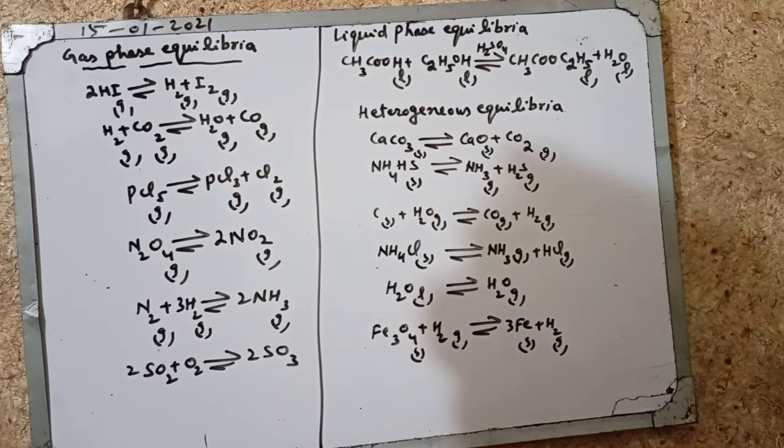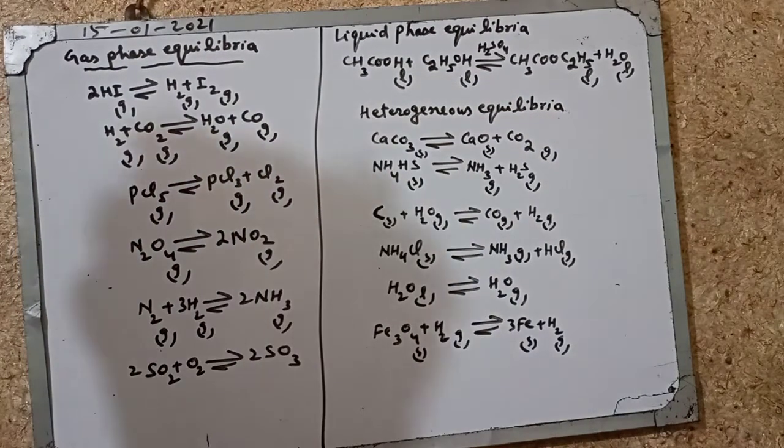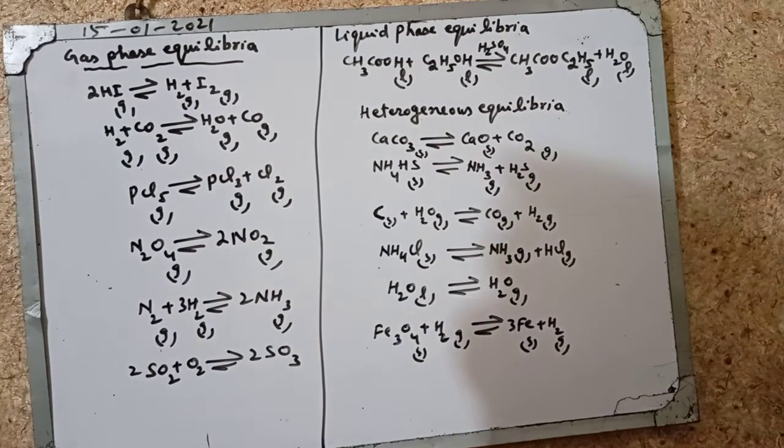H2S gas, NH3 is gas, and NH4HS is solid. When heated it gives carbon monoxide and H2 in a reversible reaction. This is heterogeneous equilibria.